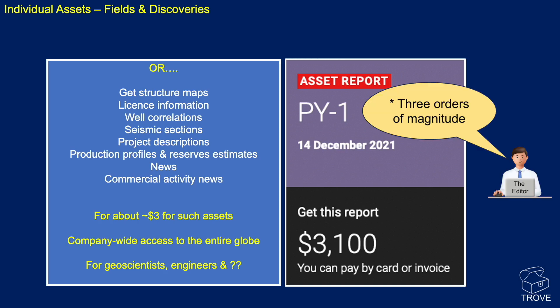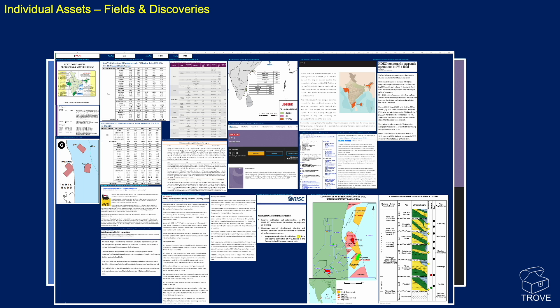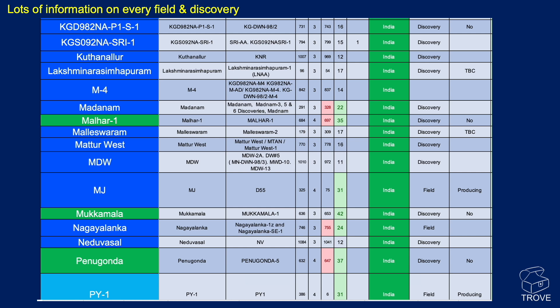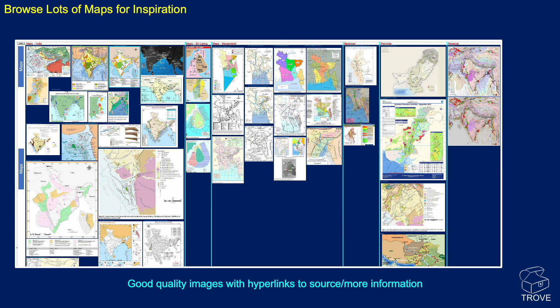That's around two orders of magnitude less. It's company-wide access, available for the entire globe. We see geoscientists, engineers, project managers, new ventures teams, and all sorts of disciplines finding valuable information within Trove. You get lots of information on every field and discovery — source rocks, maturity, unconventionals right across the region — and lots of information from maps. There's surely some inspiration here for geoscientists looking in the region.